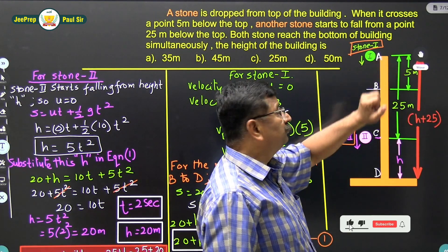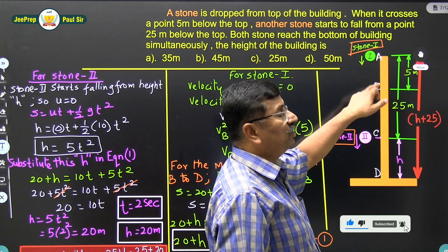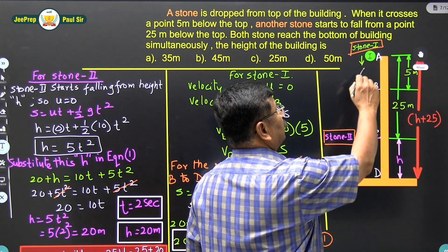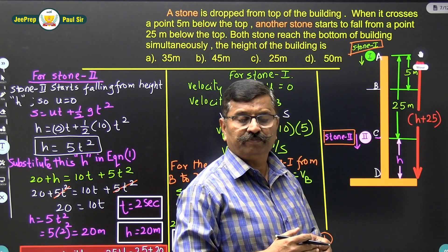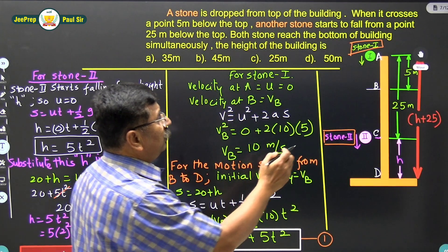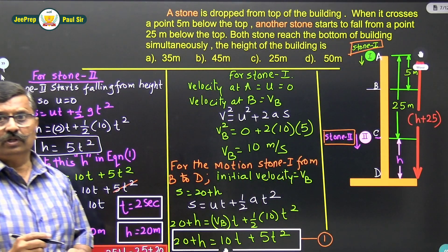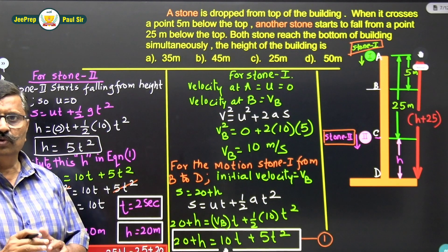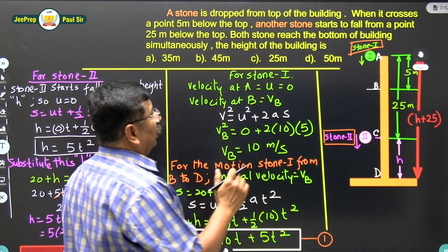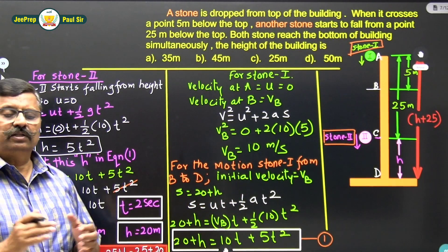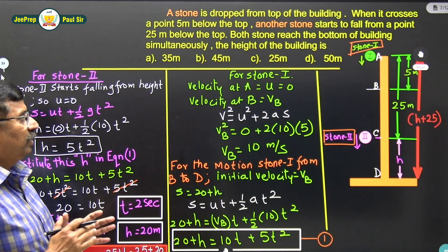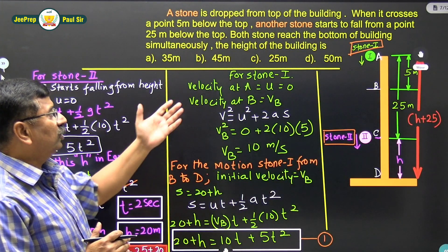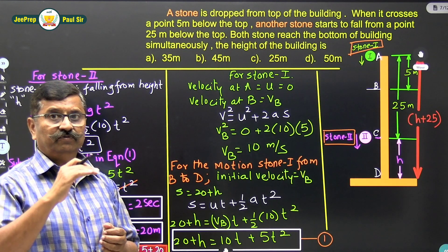So, A is the top of the building, point B is 5 meters below the top, and point C is 25 meters below the top. Stone 1 starts falling from point A. When it reaches point B, stone 2 starts falling from point C. Both stones reach the bottom simultaneously. Let the total height of the building be 25 plus h.